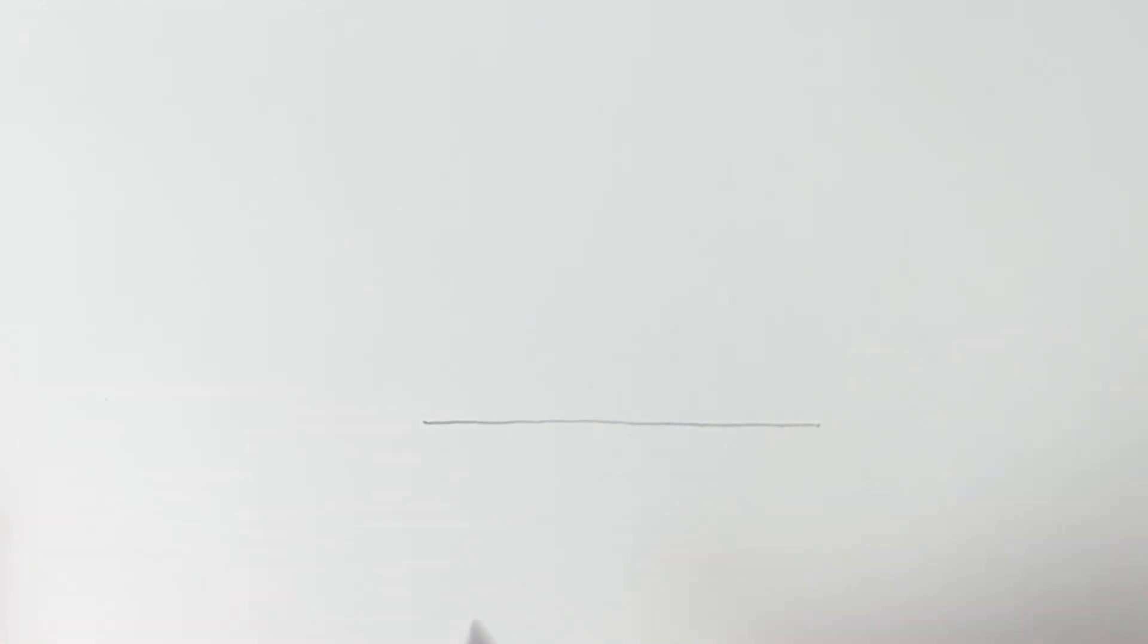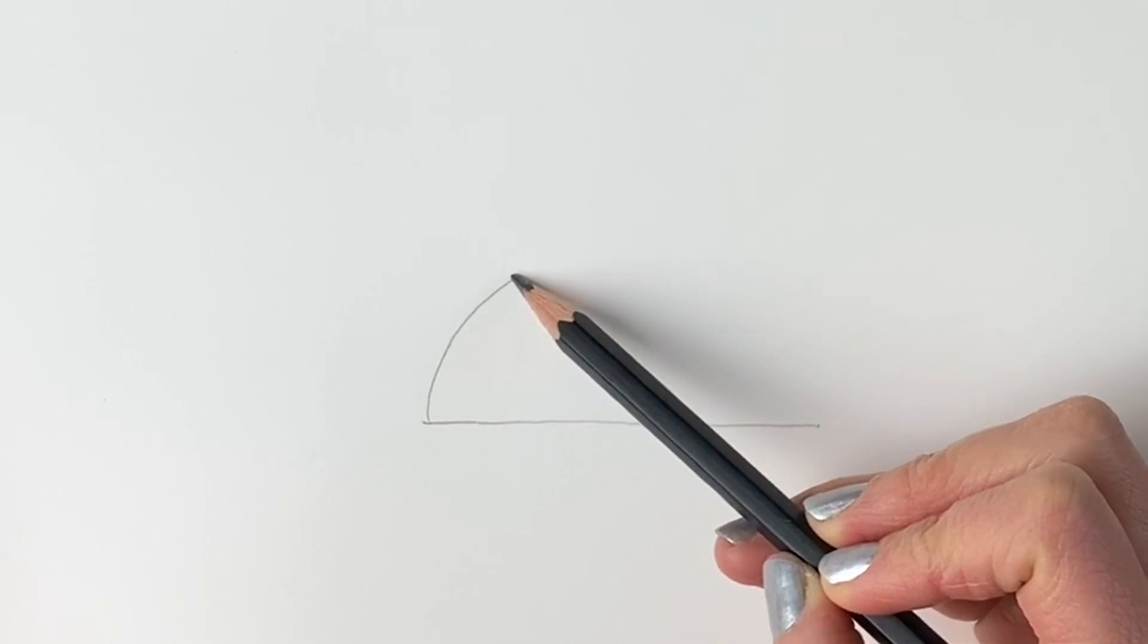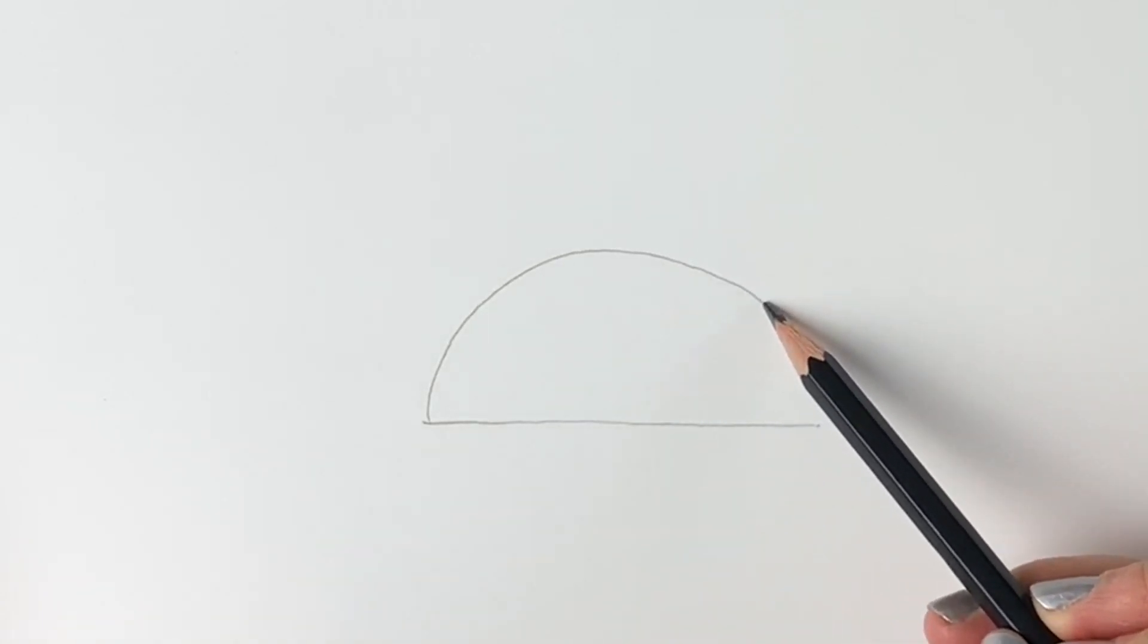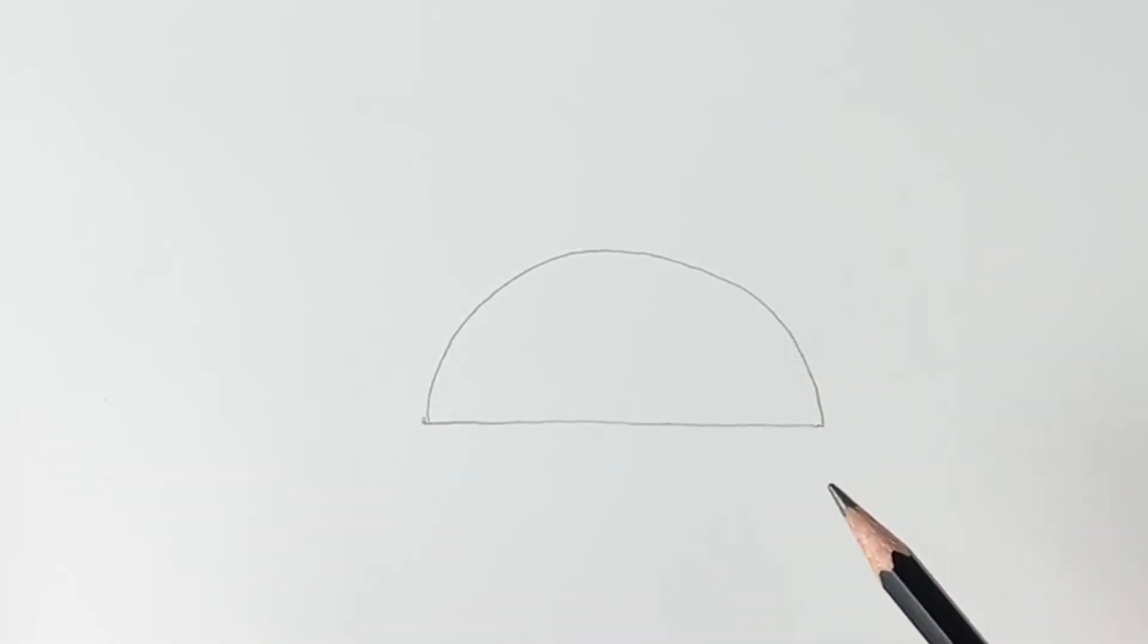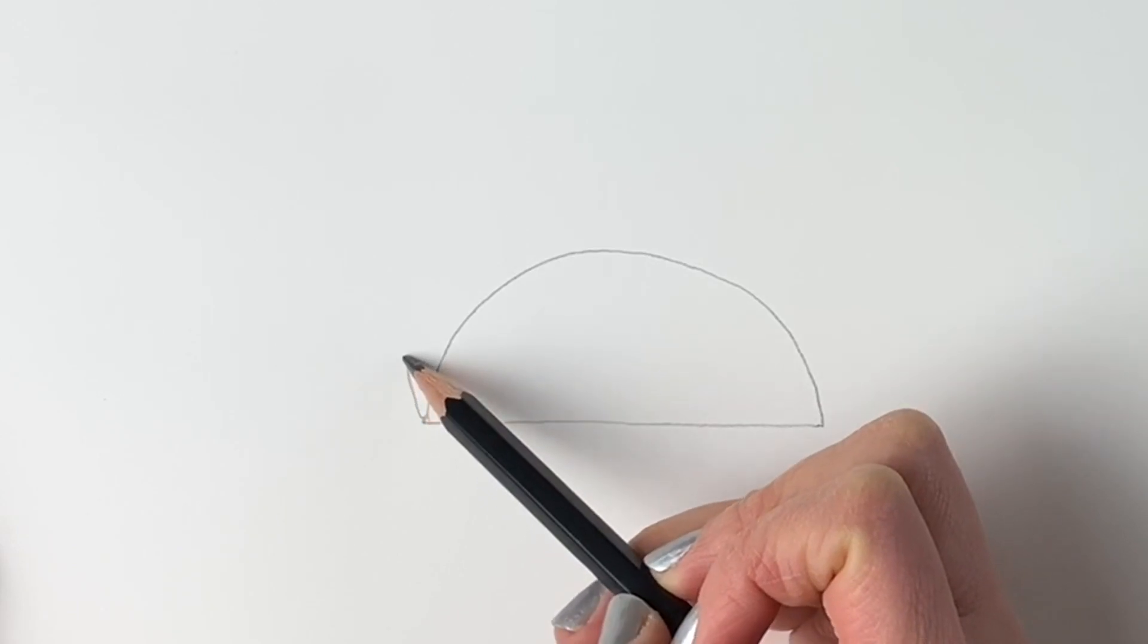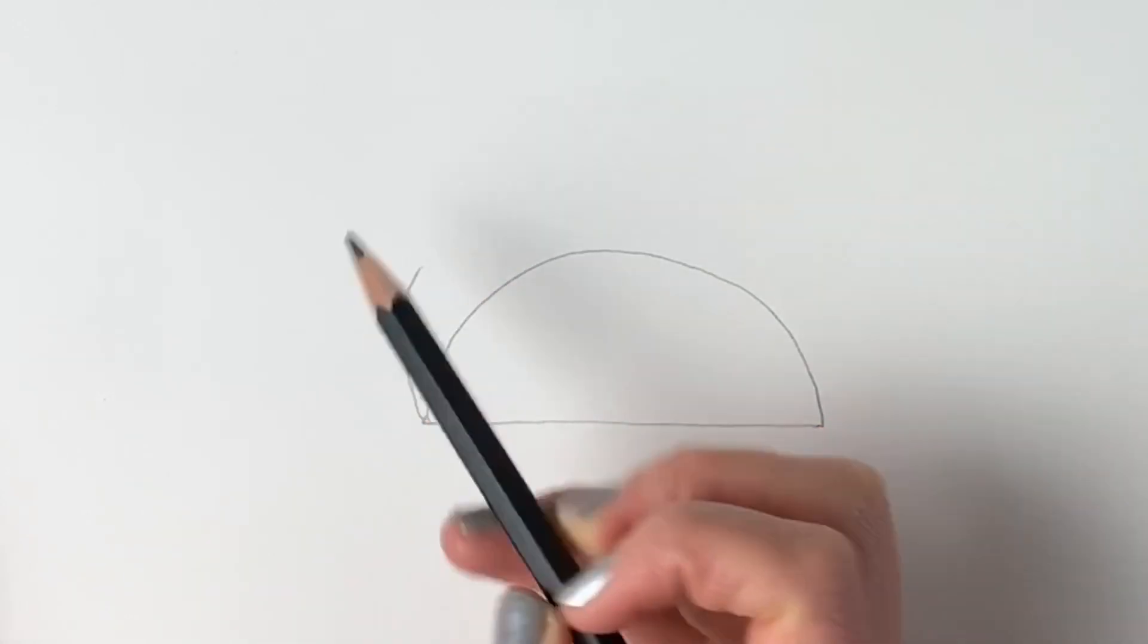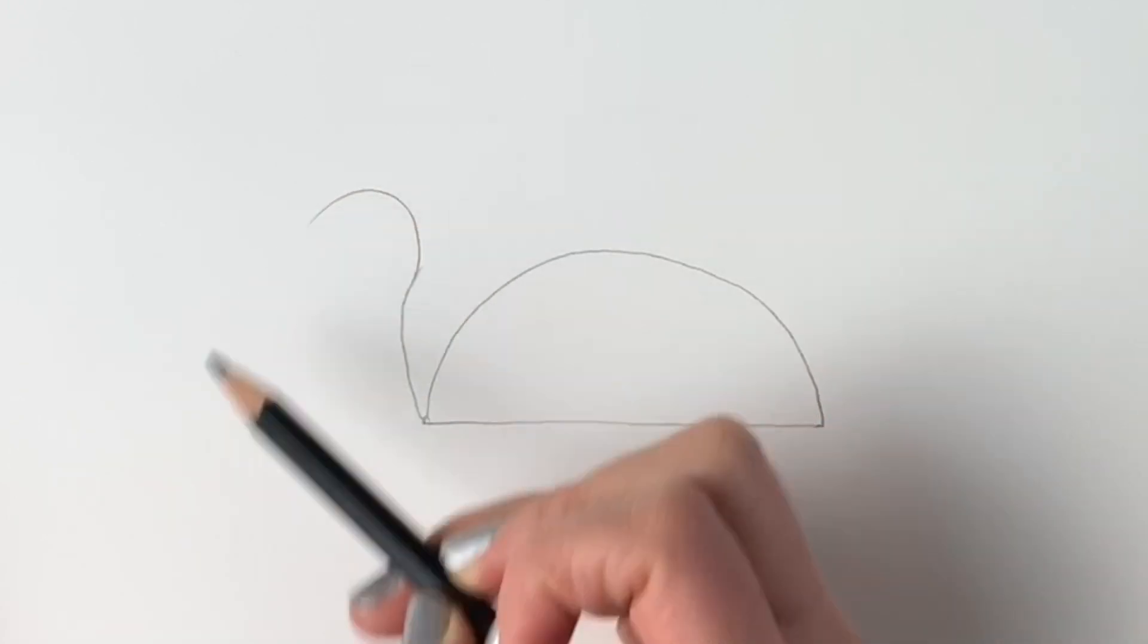Okay, we're going to start off super simply in pencil. Just draw a line going across, just like that. Then we're going to draw a curved line just up around like that, doesn't have to be perfect. And then from this left hand corner we're going to draw a wiggly line going up and then round like that.